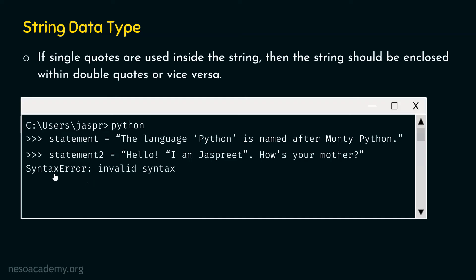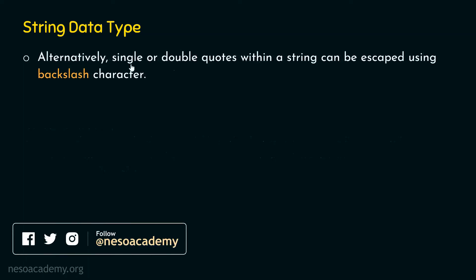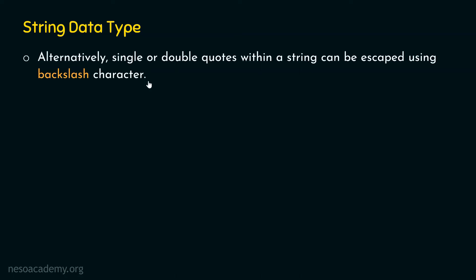The question is how to eliminate this error. We might plan to use both single and double quotes within a string. Alternatively, single or double quotes within a string can be escaped using the backslash character. Whenever we plan to include both single and double quotes within a string, we should escape them using the backslash character. Escaping a quote means that we are telling Python to not consider the quote as a closing single or double quote.